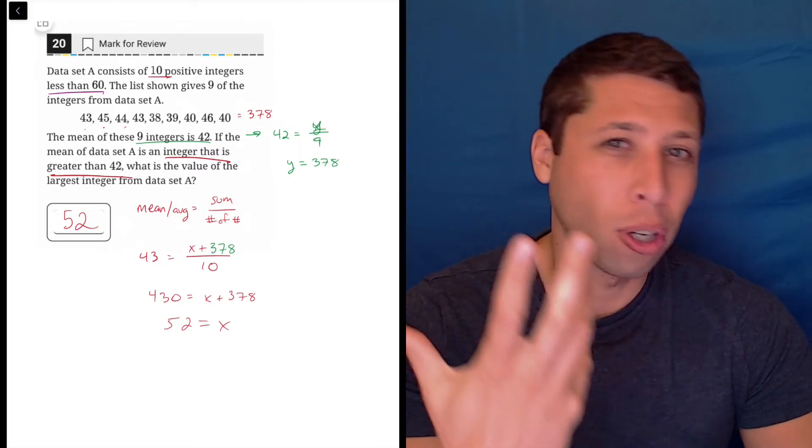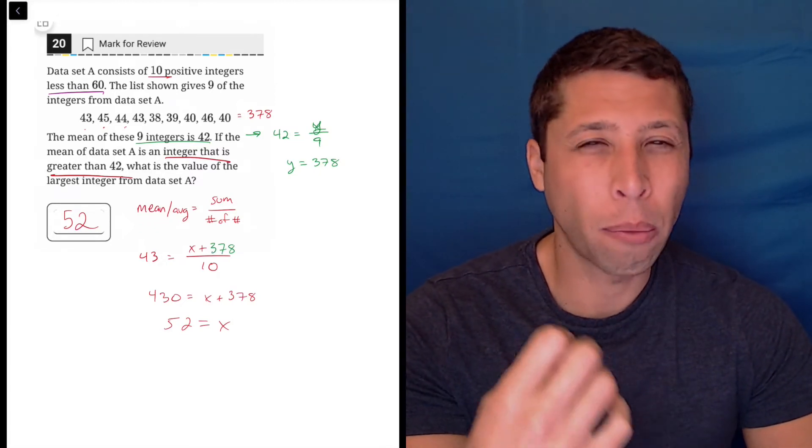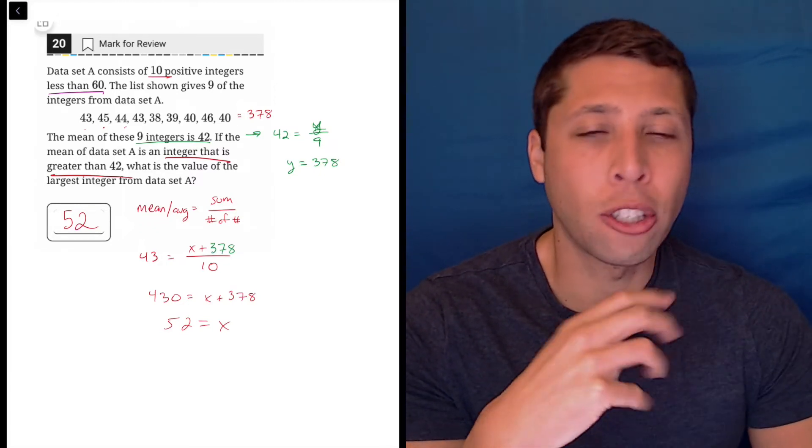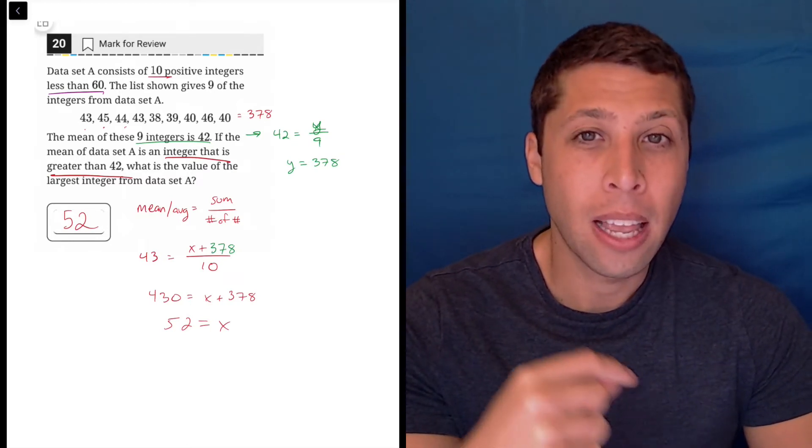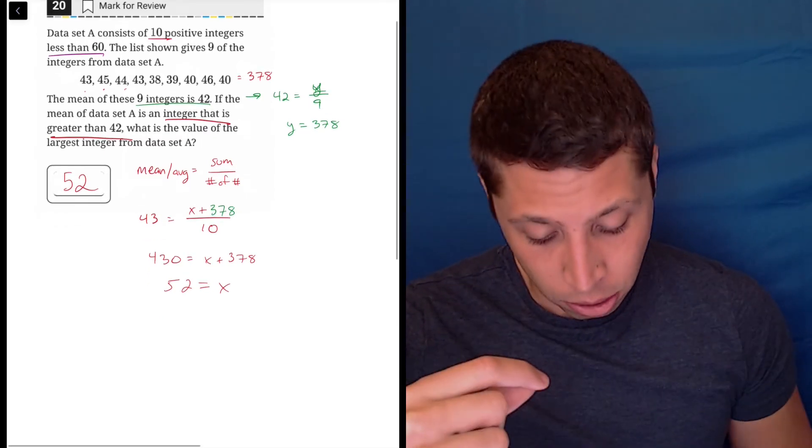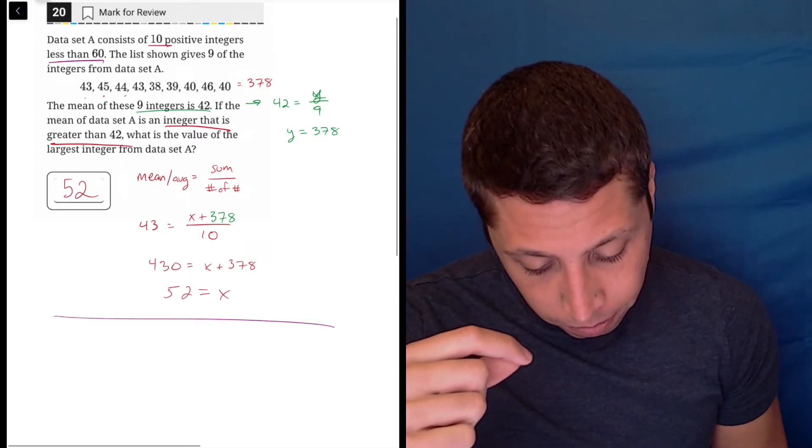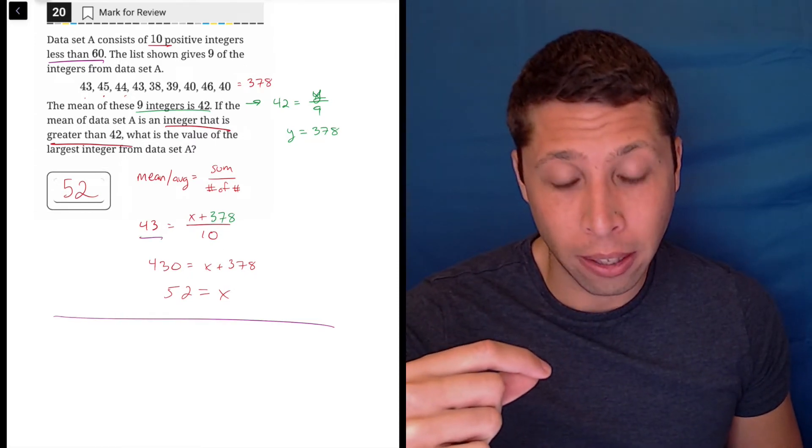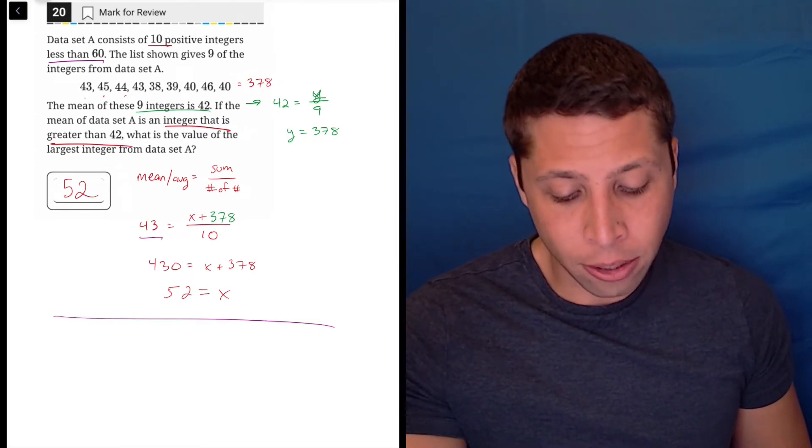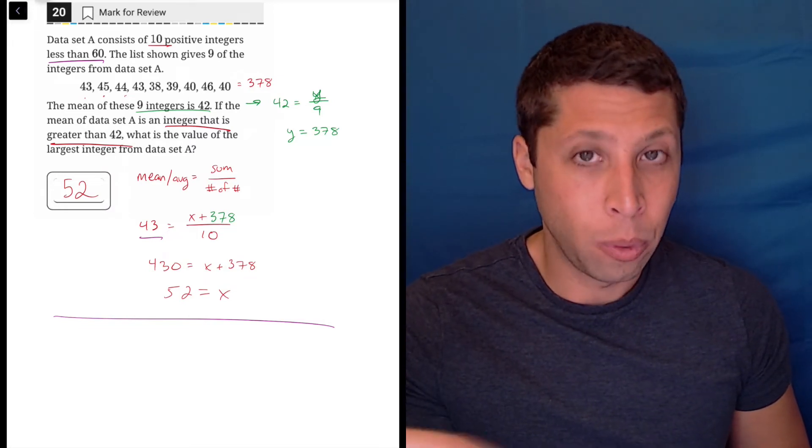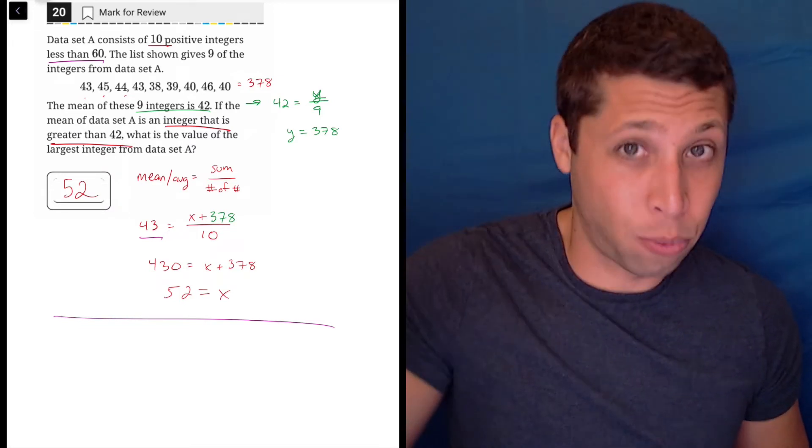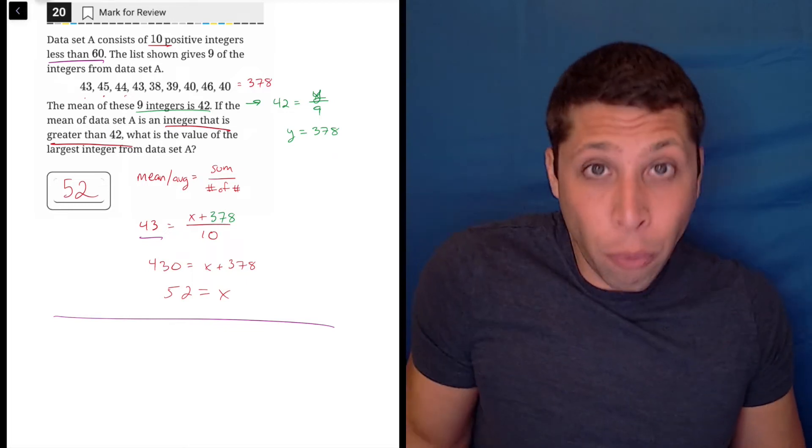So again, I'm trusting the process a bit. If I were skeptical, the place to make a change wouldn't be with the value of X. It would be with the average. So if you really want to try it, change the 43. We needed an integer greater than 42. We did 43 because it was just the next one, but let's just try 44. Let's do the next one and see what happens.